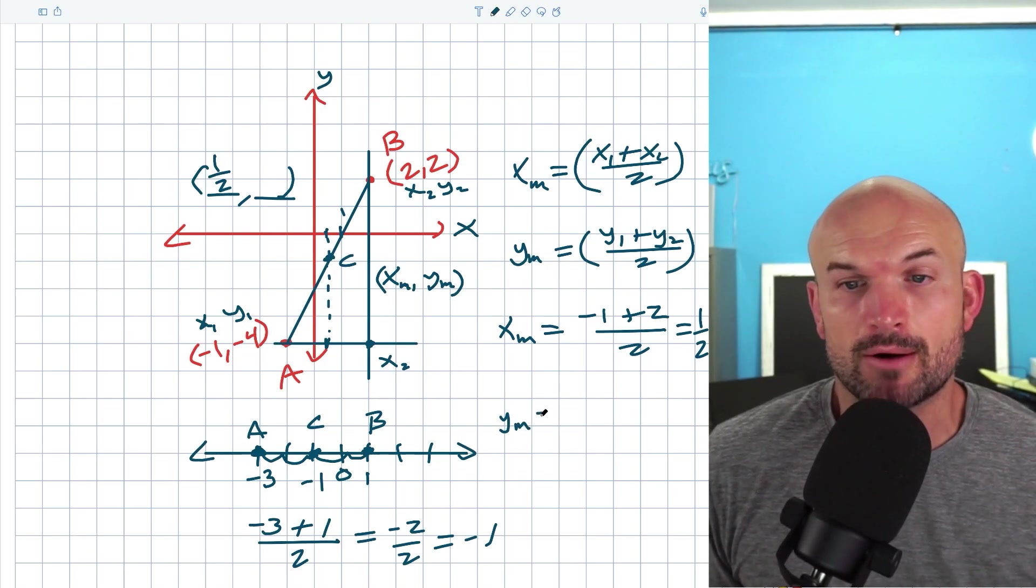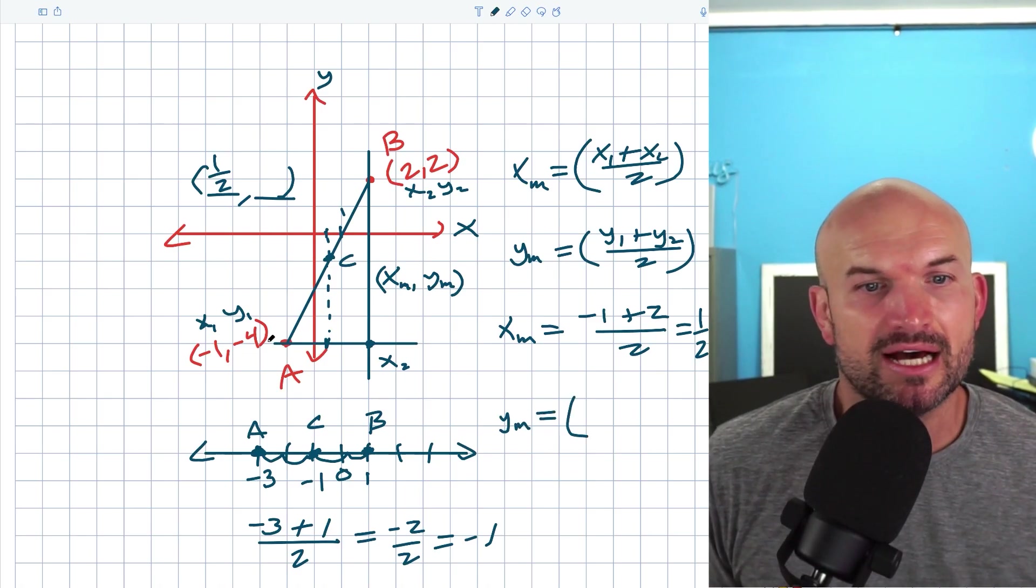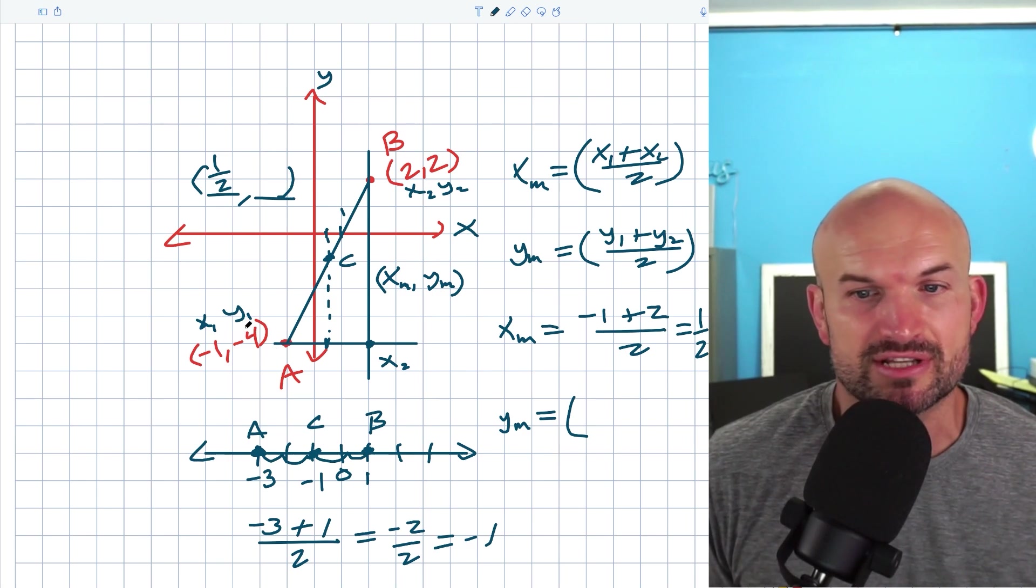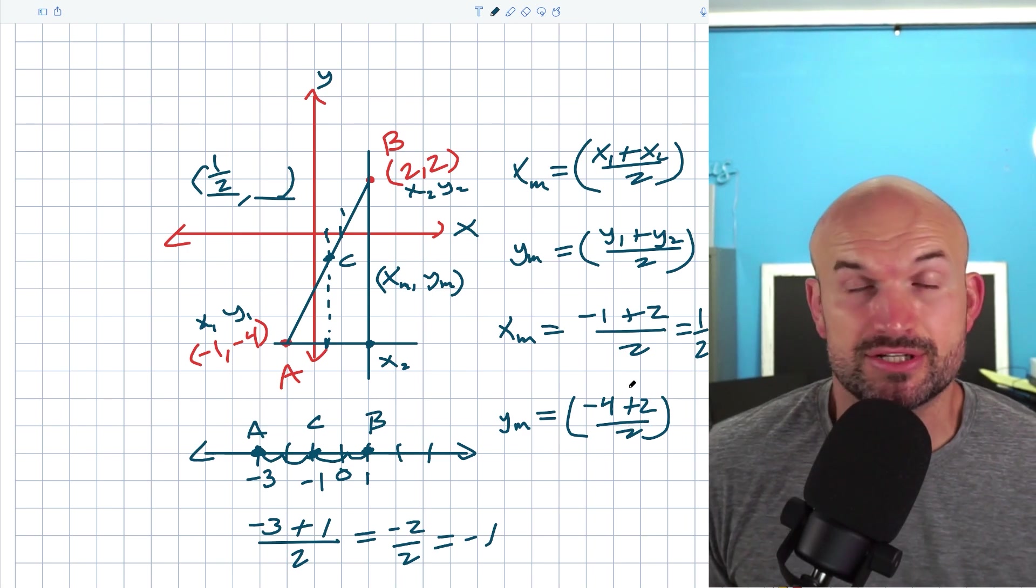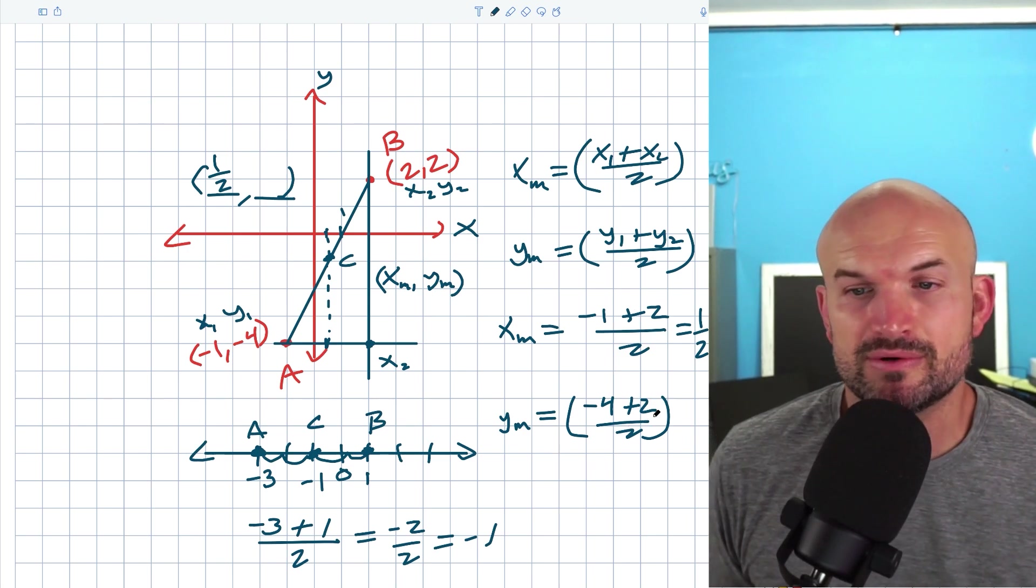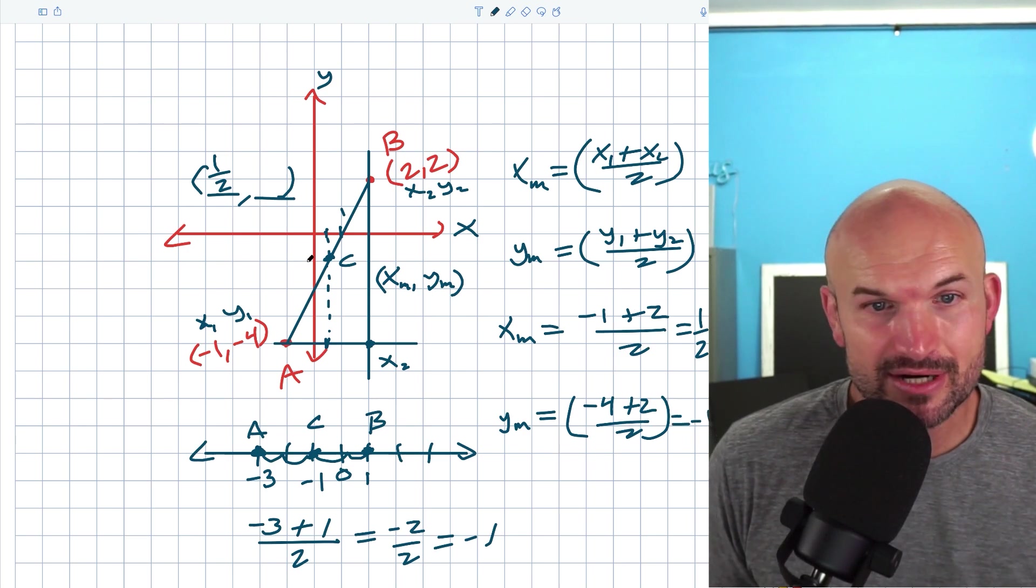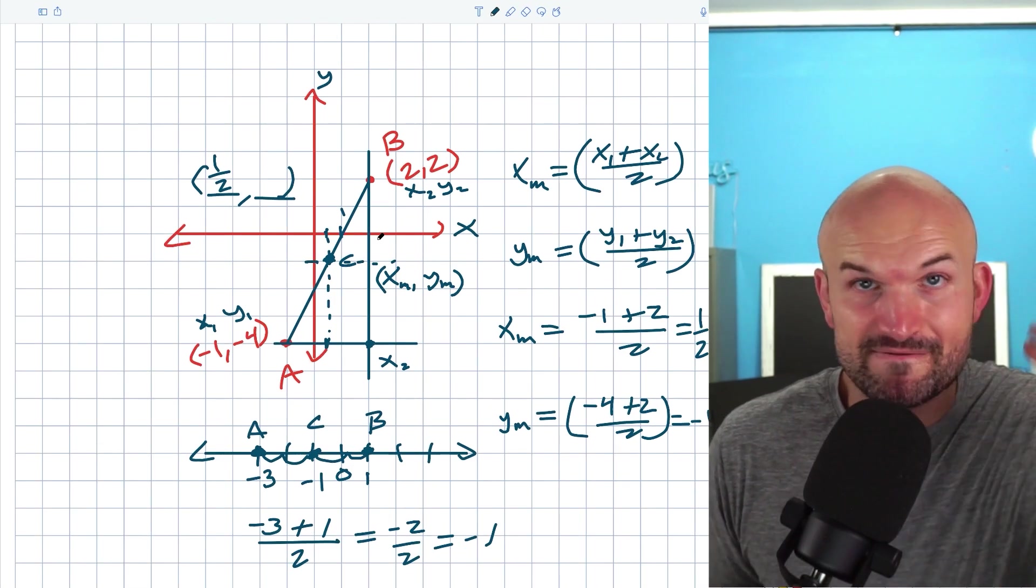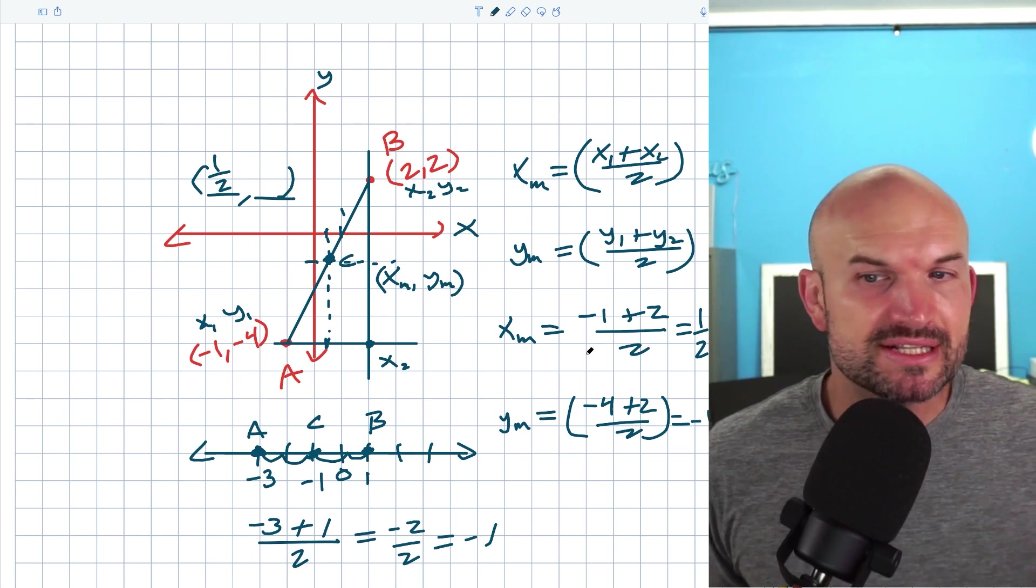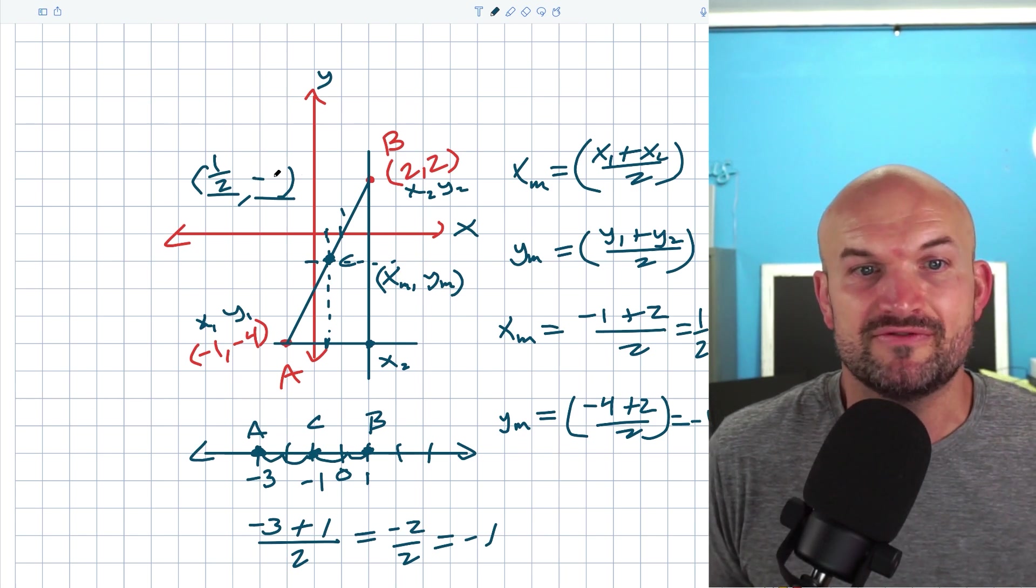Now let's go and check out our Y_M. So our midpoint for Y is going to be the addition of our two Y coordinates. So that's going to be Y1, so negative four plus two divided by two. Well, negative four plus two is going to be negative two divided by two, which equals negative one. So we can see negative one right there. So I was pretty close in that regard. And you can see, like how I visualized where the midpoint was, you can see mathematically I could go ahead and verify that.